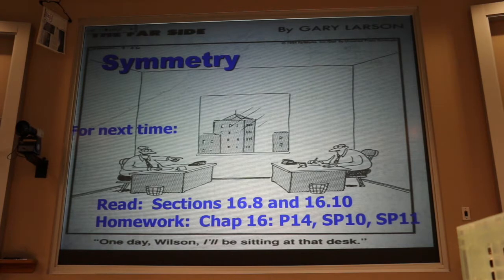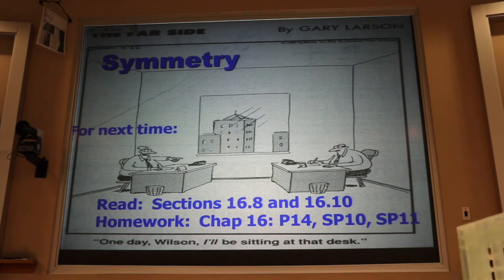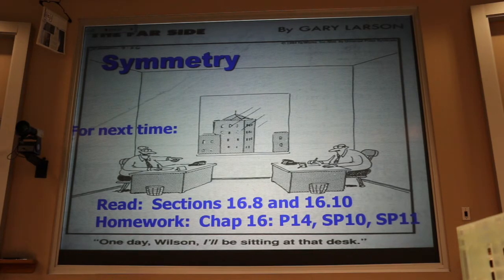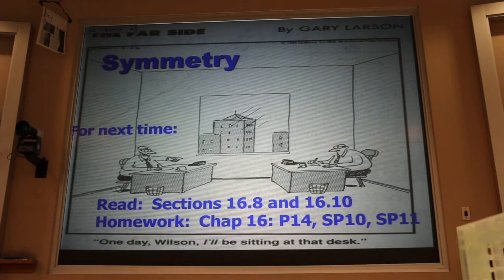What I'm going to show you today is that we can find field lines using symmetry. Symmetry means if the problem looks the same in a mirror as it does without, the answer should look the same too. If the problem looks the same when I stand on my head, the answer should as well. When I say 'problem,' I mean the charge—the source. When I say 'answer,' I mean the field lines.